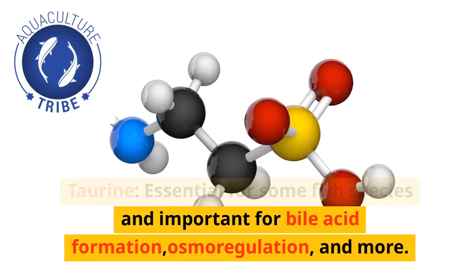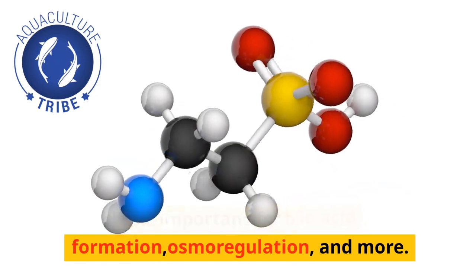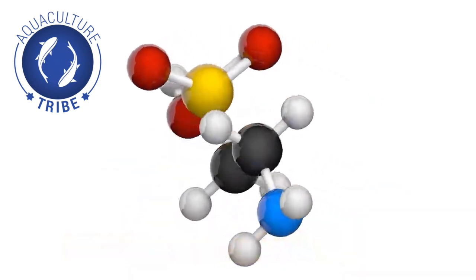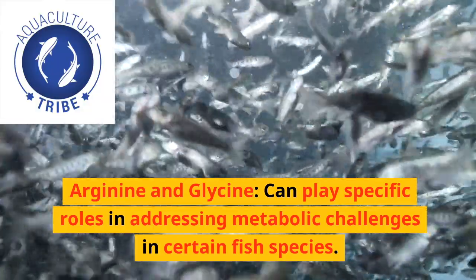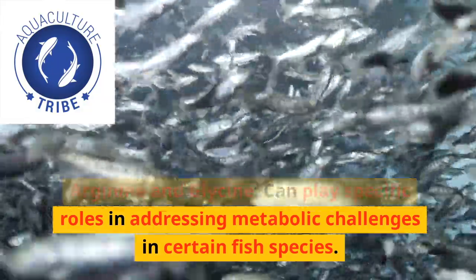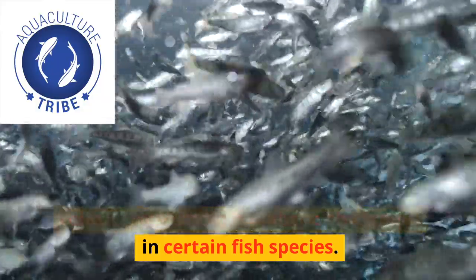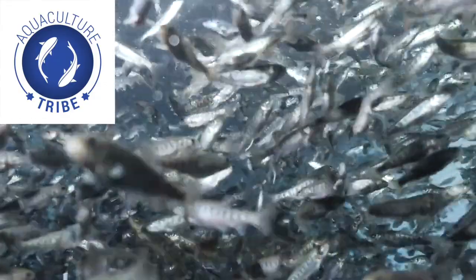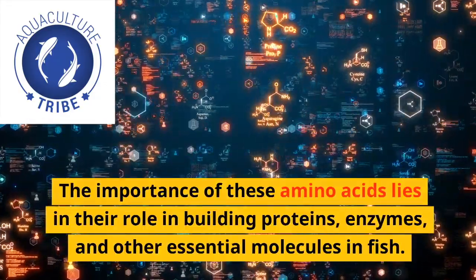Specific amino acids with regulatory functions: taurine is essential for some fish species and important for bile acid formation, osmoregulation, and more, and may be added to fish feed. Arginine and glycine can play specific roles in addressing metabolic challenges in certain fish species.